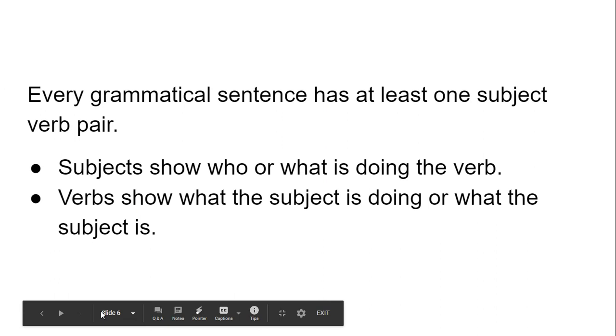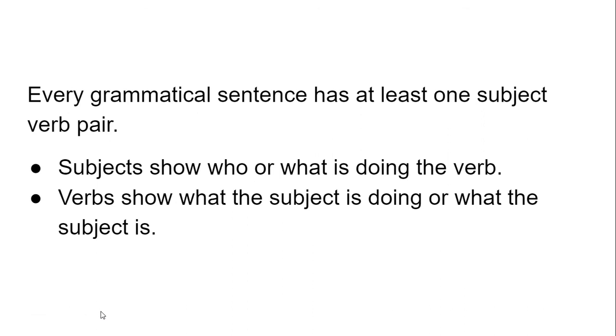At the core, we still have 'the dog smiles.' To make a grammatically complete sentence, you've got to have at least one subject-verb pair — a subject and a verb tied together. The subject shows who or what is doing the verb, and the verb shows what the subject is doing.